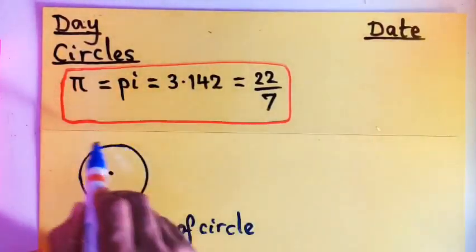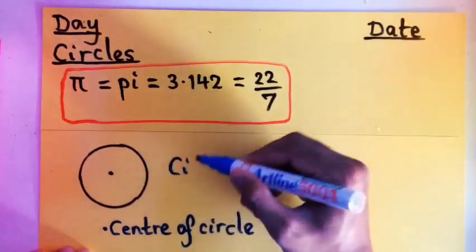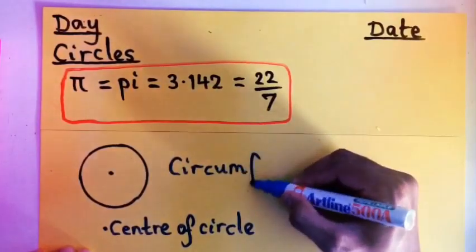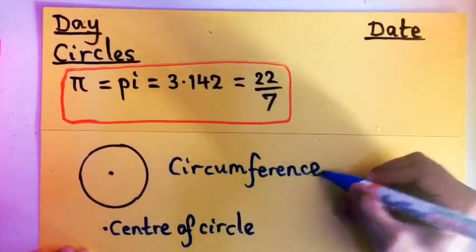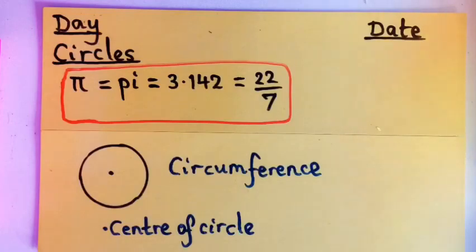And the line, the circle that we just drew just now, there is a name for it. And the name for it, we call it circumference. Circumference is the circle, the whole circle.